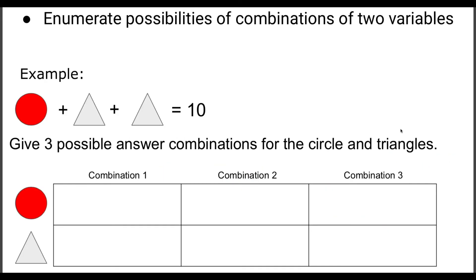Lastly, we're going to look at enumerating possibilities of combinations of two variables. And all that really means is, looking at our example, you may get given a list of shapes or objects. And it will add up to a total. And it will say, give three or several possible answer combinations for the circle and triangle in this case. So all we need to do is say, what could these be worth? And really, it's the case of trial and error. You could say, if that circle is worth two, let's put that in here. Two.